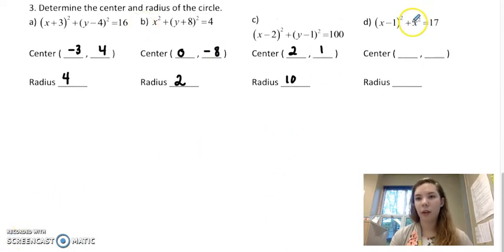On this last one, there's actually a typo. This is supposed to be a y. We'll correct that for the future, but just change it to a y please. And your center would be 1, 0, and your radius is the square root of 17. And again, I'm going to leave it this way because it's exact form. It doesn't simplify any further.